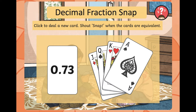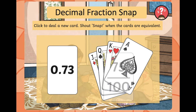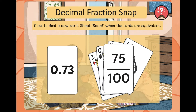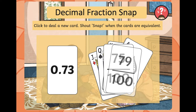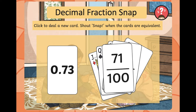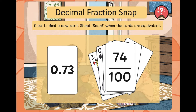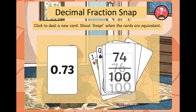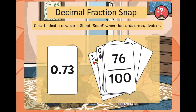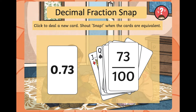The next one is 0.73. Is it equivalent to 75 hundredths, 79 hundredths, 71 hundredths, 74 hundredths, 76 hundredths, 73 hundredths? Well done if you said snap — 0.73 is equivalent to 73 hundredths.